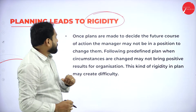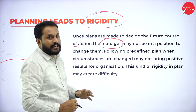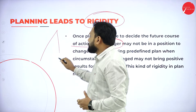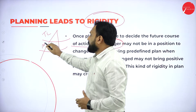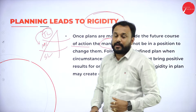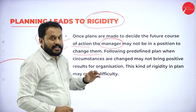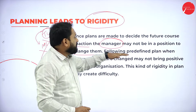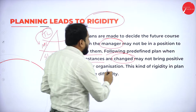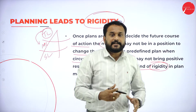Now let's look at rigidity in detail. Once plans are made to decide the future course of action, the manager — who guides and directs all people — is involved. The top level plans, the middle level executes, and the supervisory level gets the work done. The manager may not be in a position to change the plan, as it is done by top level management. The manager must execute it following the predefined plan.